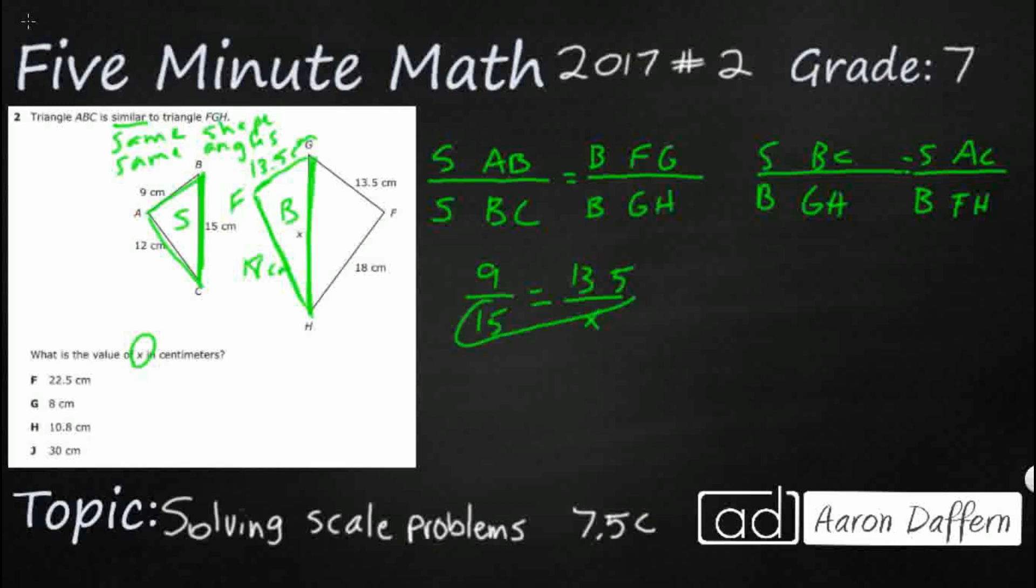All right. So I need 13.5 times 15. It's 25, 15, 17. That's 675, 135. That's 5, 12, 10, 202.5.